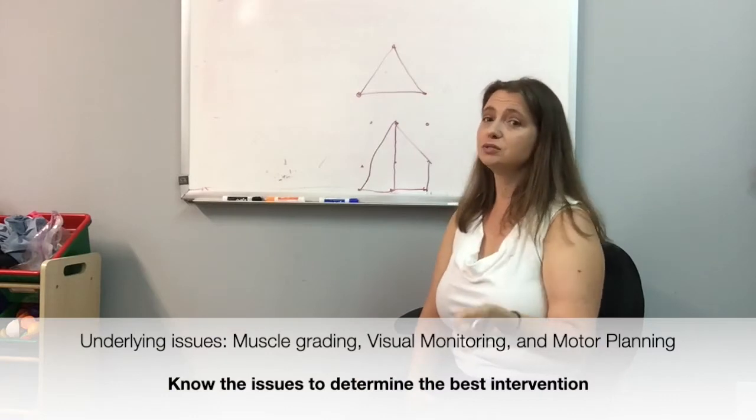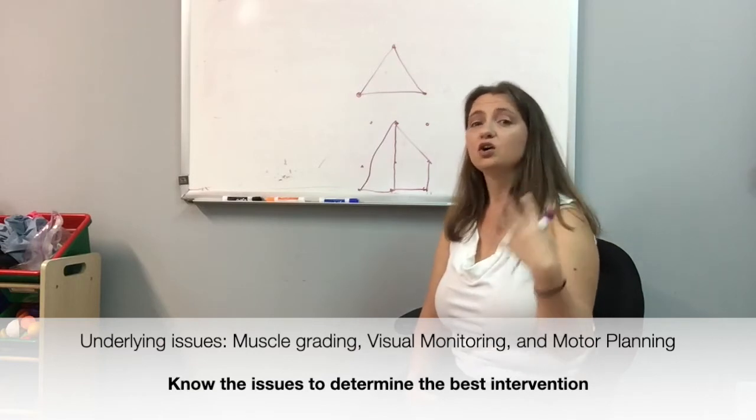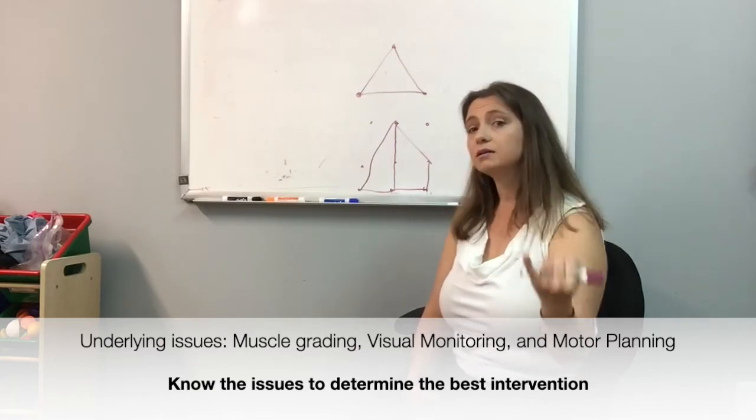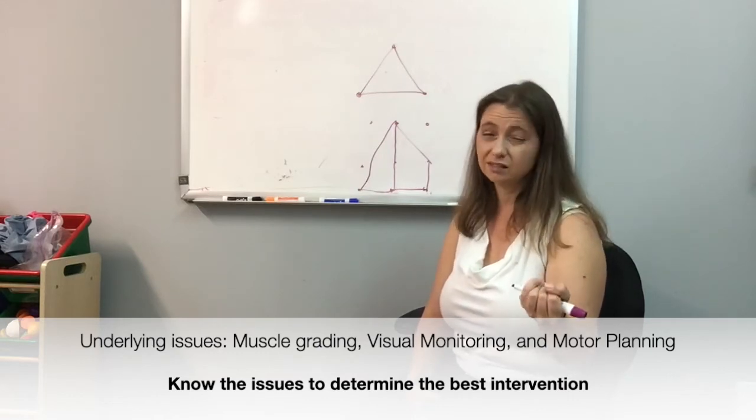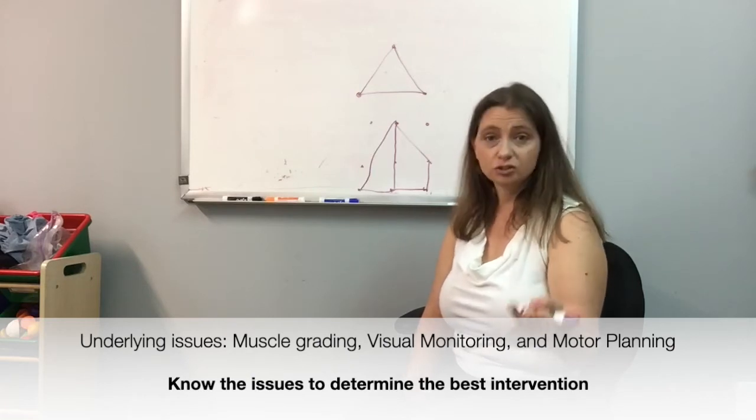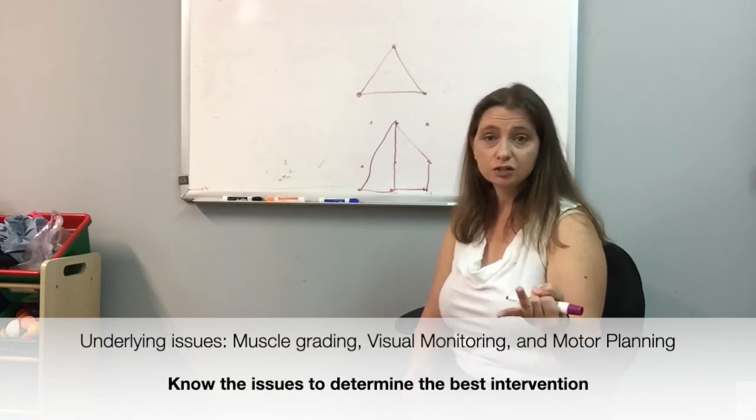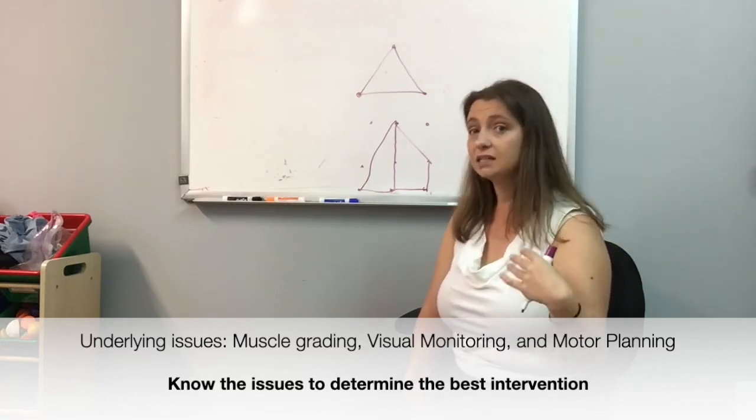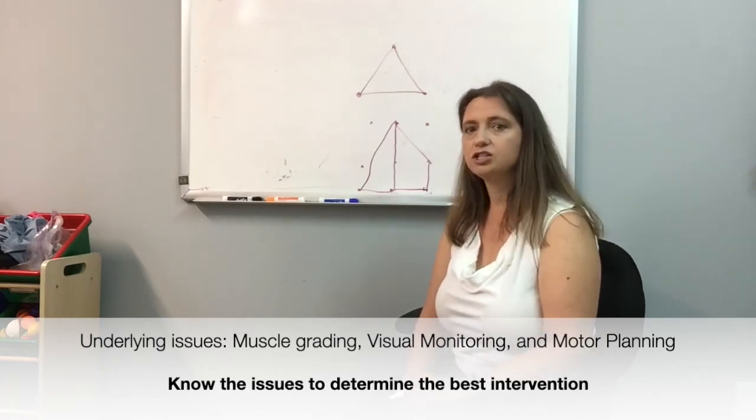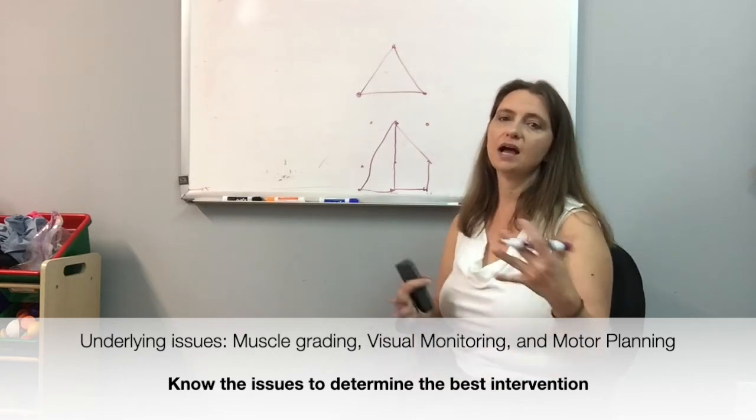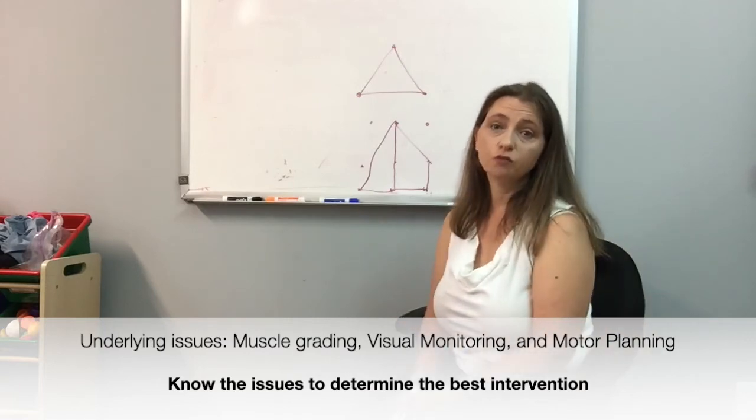Visual motor issues may not just be from difficulties with visual perception or integrating vision and motor. They could come from difficulty coordinating and grading your muscles so the figure doesn't look very accurate when they copy it, which drives down their score. It could be that there's a visual monitoring issue where you need to actually train the visual system to guide what the fingers are doing, or it could be a motor planning issue where the child just doesn't know how to approach the build of the figure and they're still struggling with the sequence of what to do.